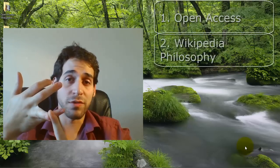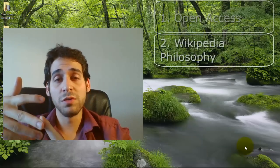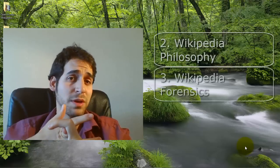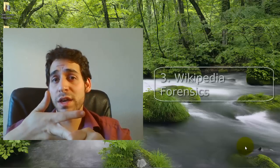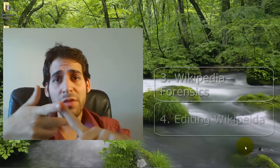Moving on to Wikipedia philosophy, then we're going to move into Wikipedia forensics, which is about understanding more of the system behind Wikipedia. Then there's a section on Wikipedia editing covering the markup available there — it's a priority markup so it can be difficult sometimes. Lastly, we'll cover Commons, the media repository that hosts all the Wikimedia content for Wikipedia and other projects.